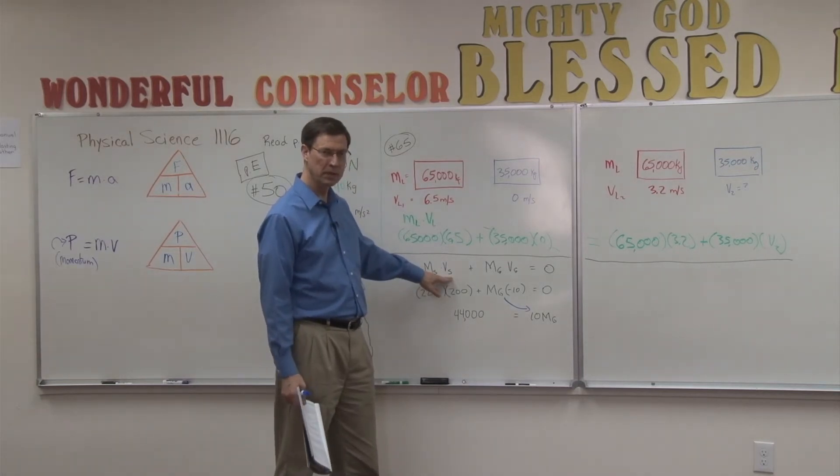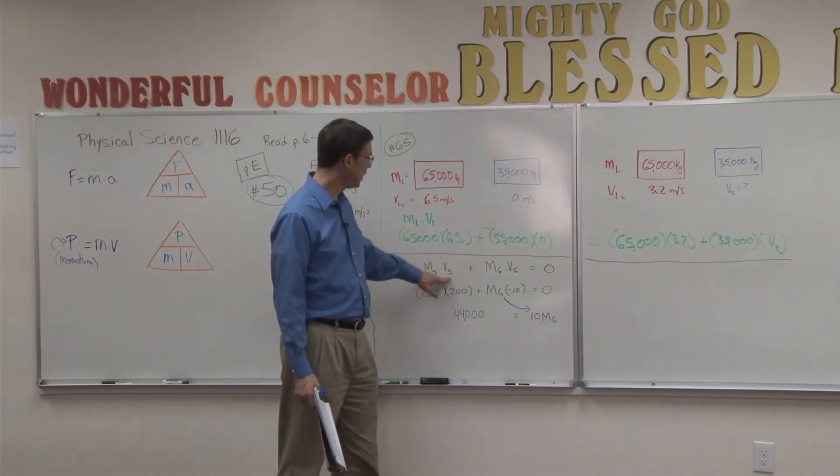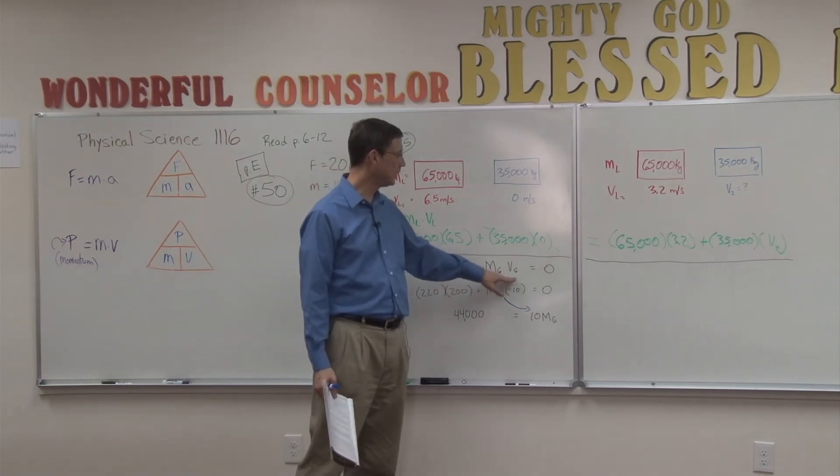The mass of the shell, times the velocity of the shell, so that would be the momentum of the shell, plus the momentum of the gun, has to equal zero.